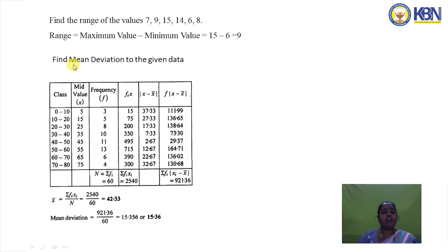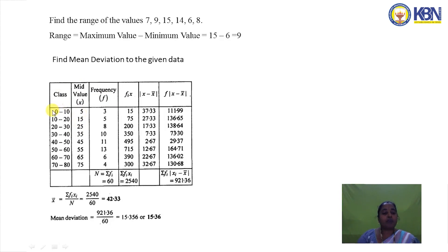To calculate the mean deviation for a given grouped dataset, we are given class intervals and frequencies. We first calculate the mid values using (lower limit + upper limit) / 2, then compute the fxi column by multiplying frequencies with mid values.